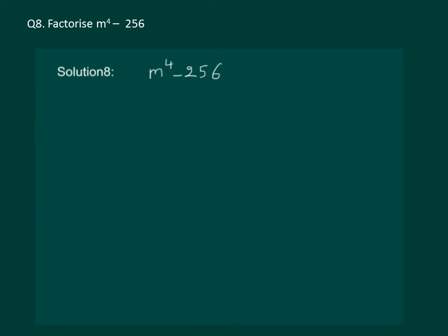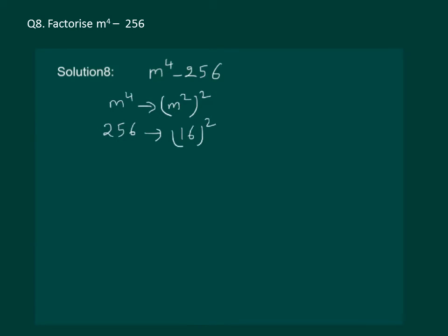Let us read the next question: Factorize m to the power 4 minus 256. We know that m to the power 4 can be written as m squared whole square, and 256 can be written as 16 whole square. So our question now becomes finding the factors of m squared whole square minus 16 whole square.